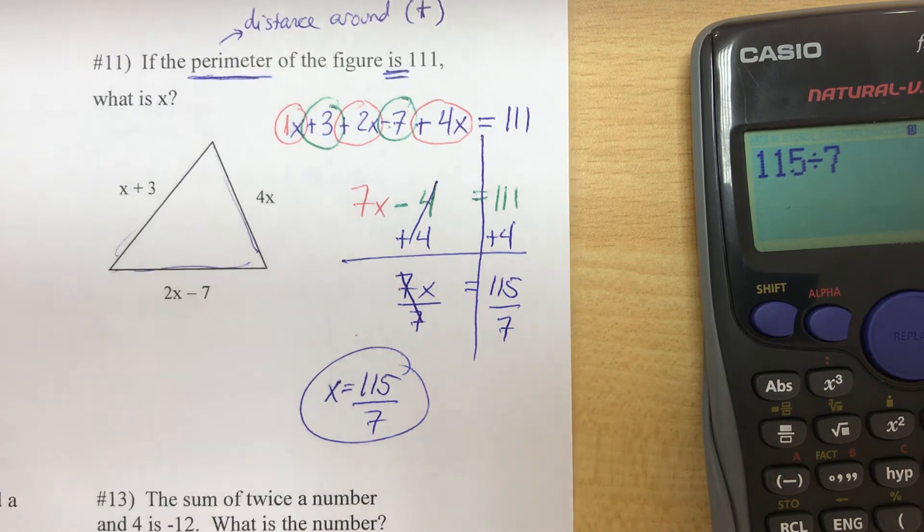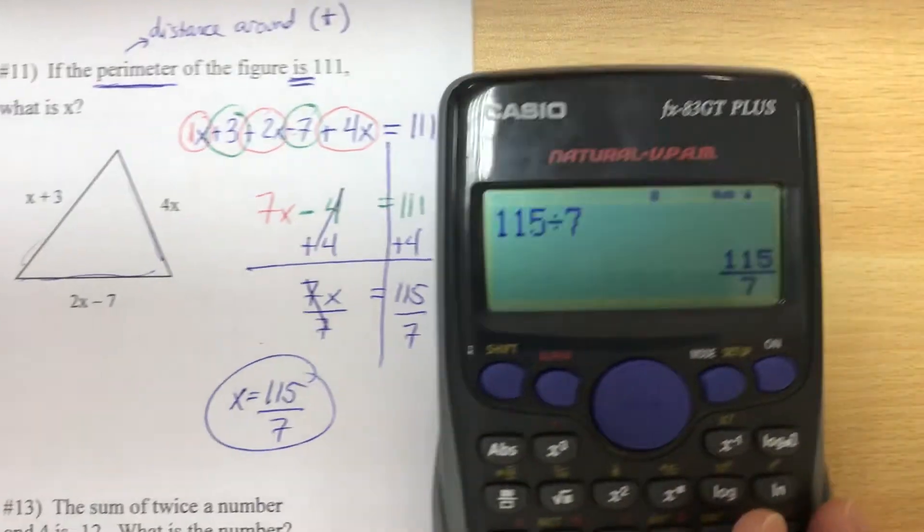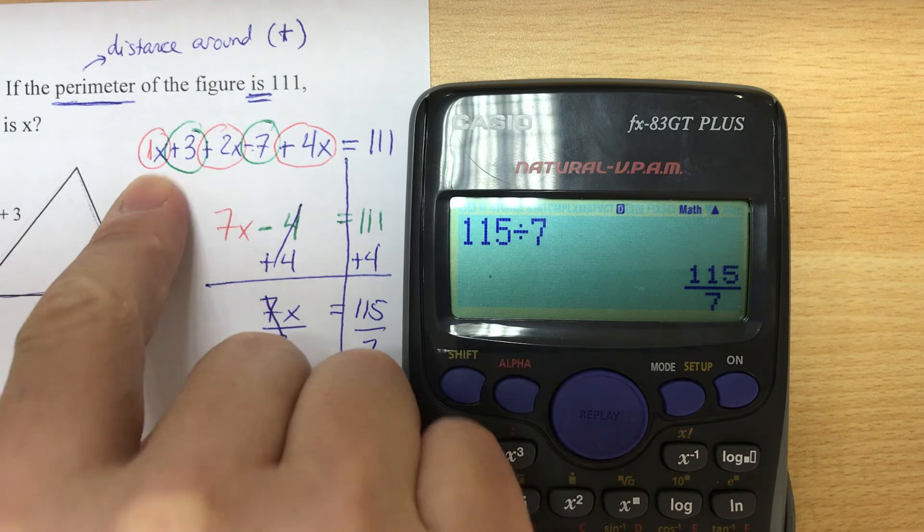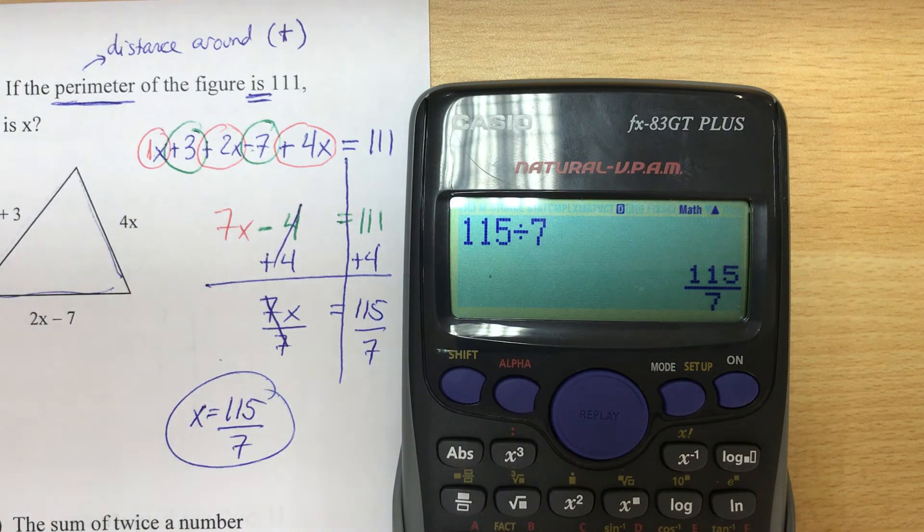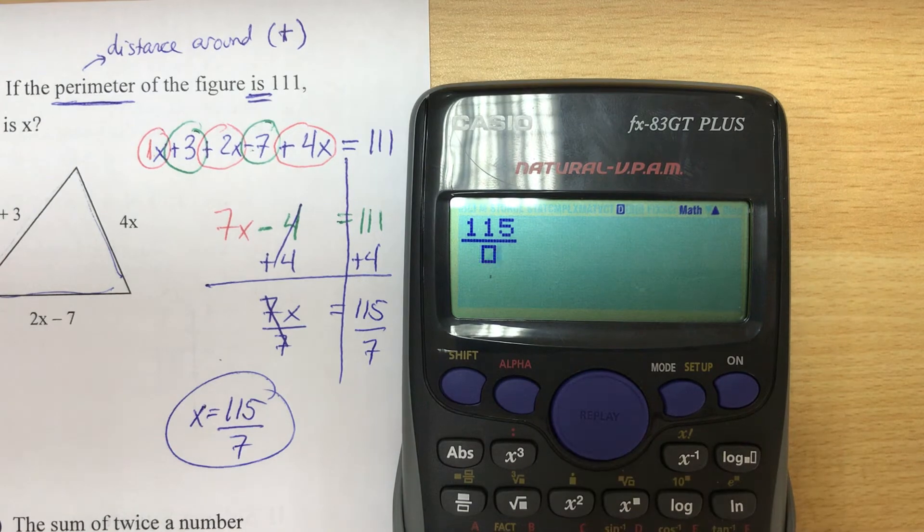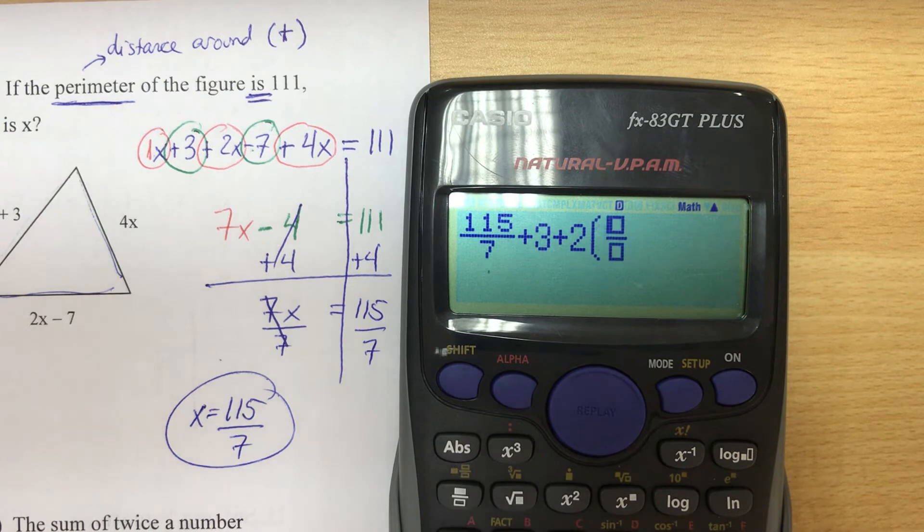I'm going to take the original equation. So it was 1x - and that was 115 divided by 7 - plus 3, plus 2 times x, minus 7, plus 4 times x. This was the last side.